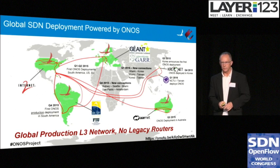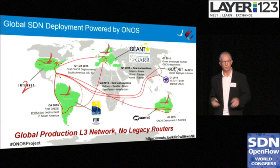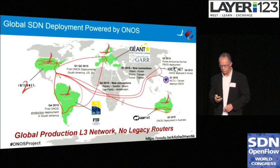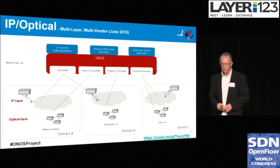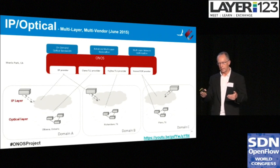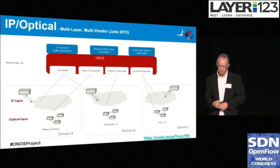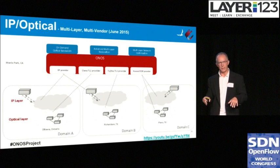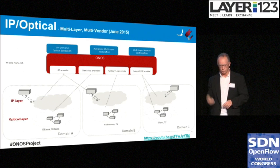This is a picture of our global ONOS-controlled footprint right now in the research and education networks, and it's growing every day. This is a production network — maybe not a Verizon or AT&T production network, but it's a production network run by research and education institutions, and they don't have to use legacy routers to have their layer three services. Huge benefit to the operator. IP optical has been a use case from the beginning for ONOS. We demonstrated early on at ONS applications like on-demand bandwidth, advanced restoration techniques, and optimization of multiple layers — those applications can run on ONOS, which takes care of the different domains of IP and optical so an application doesn't have to know about that.